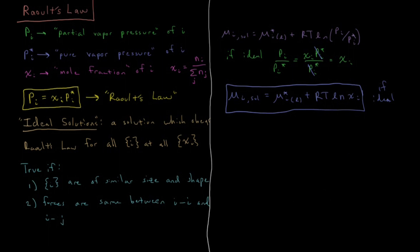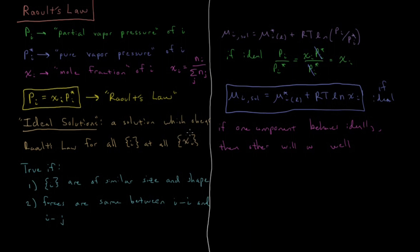From the Gibbs-Duhem equation derived in a previous video, we know that if one component behaves ideally — obeys Raoult's Law at all possible mole fractions — then the other components will as well. We can relate those chemical potentials to one another and show that if one of them obeys Raoult's Law at all mole fractions, then all components will obey Raoult's Law at all concentrations, and the solution will be ideal.